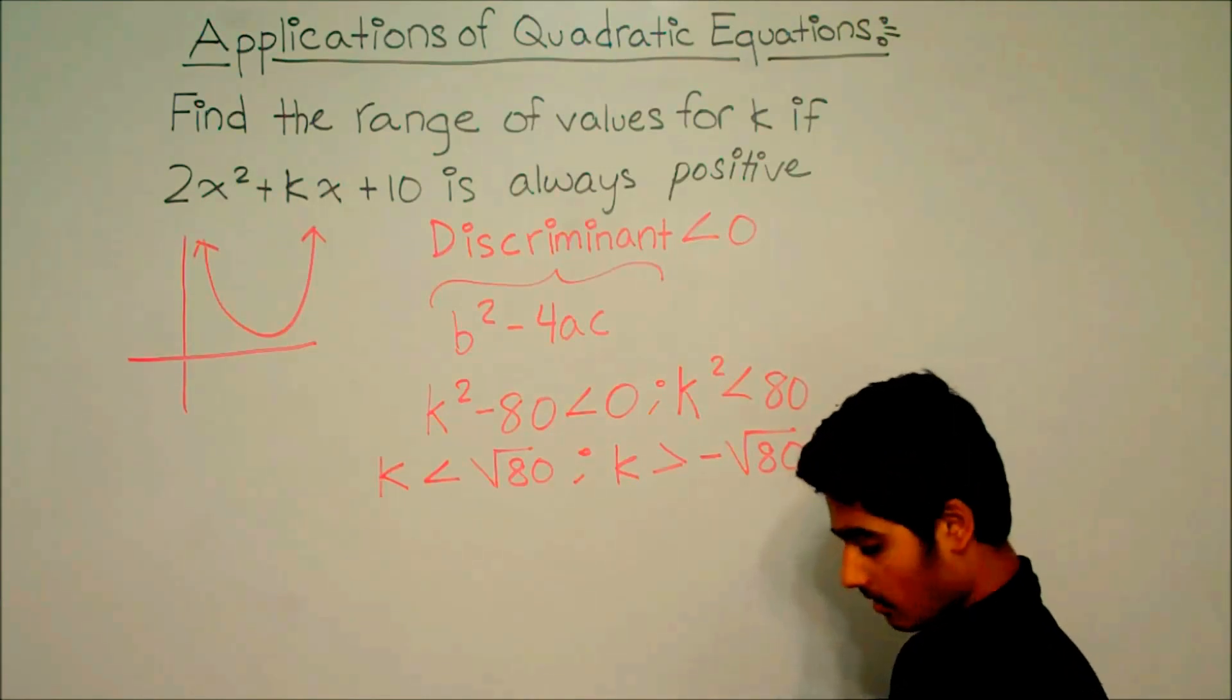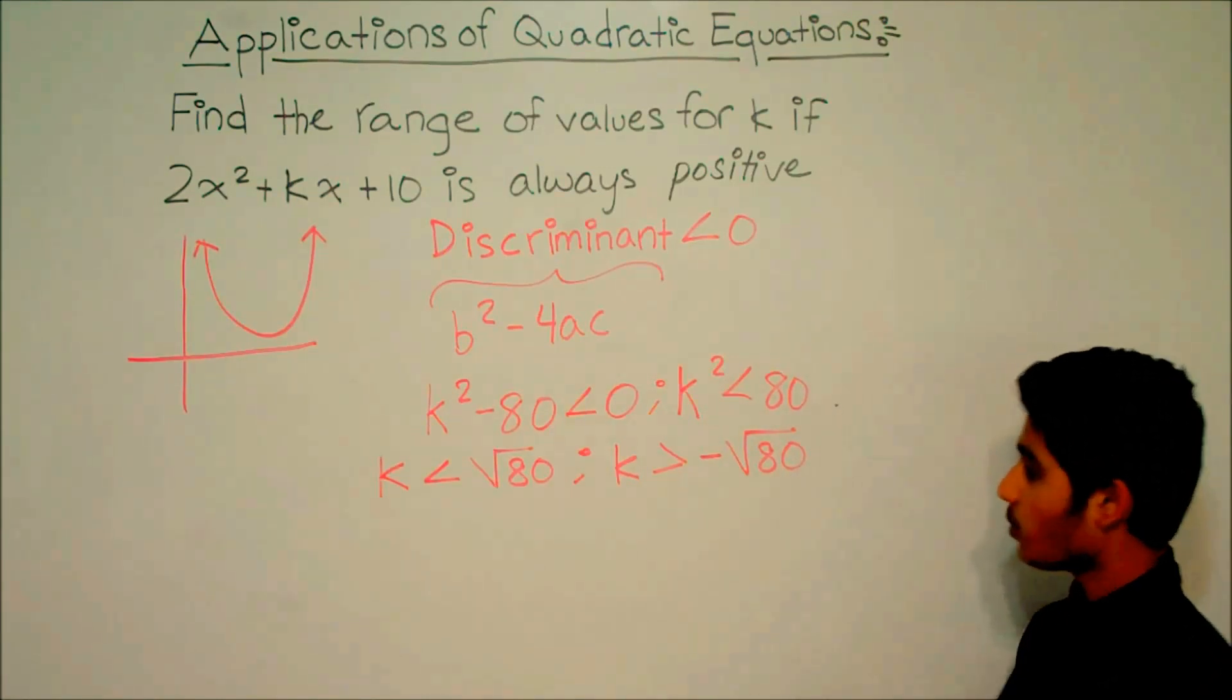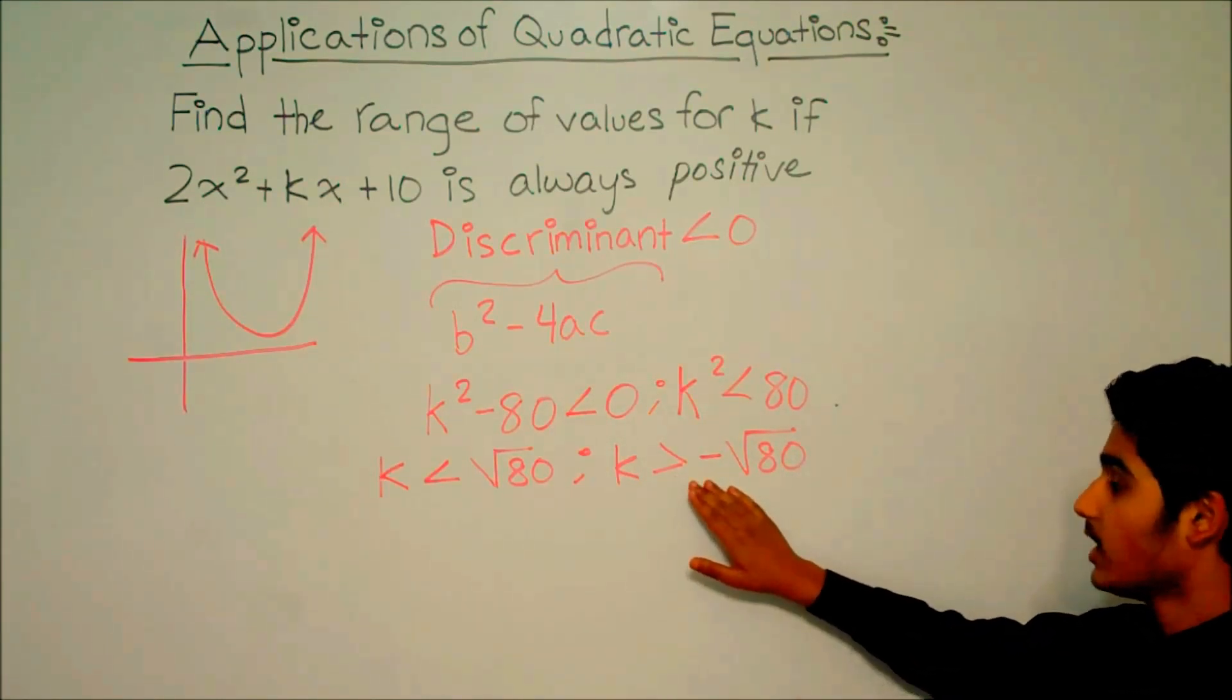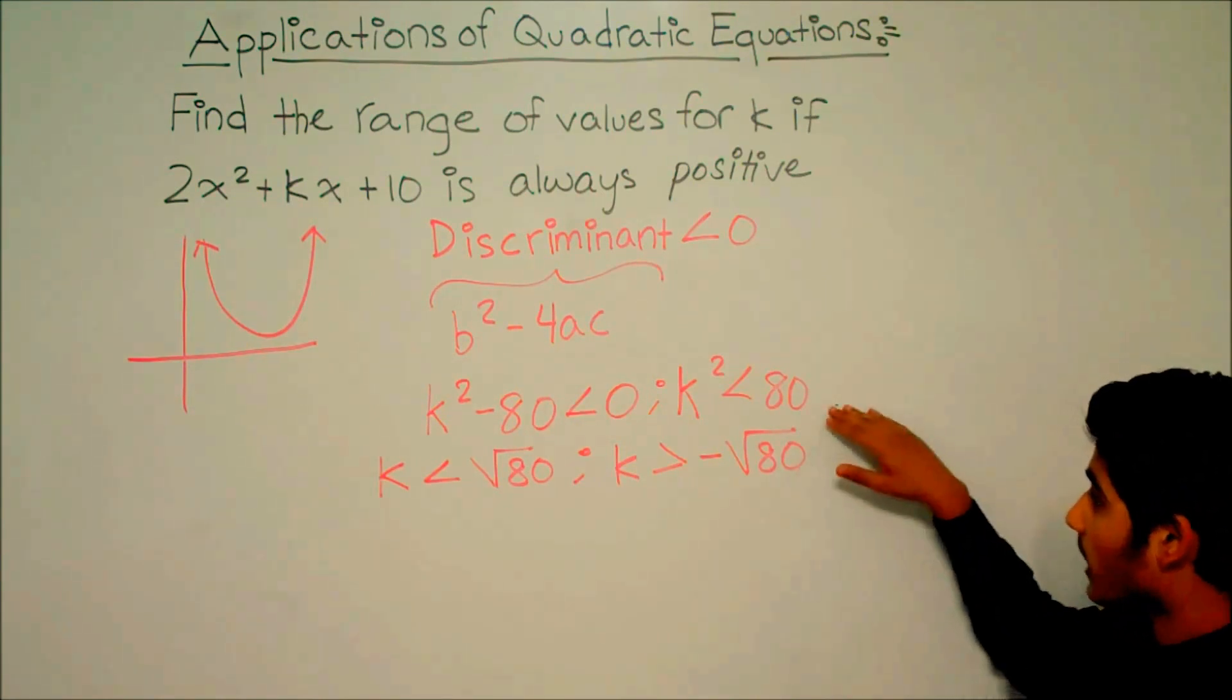The reason is because when we multiply negative square root of 80 with negative square root of 80, we get 80.